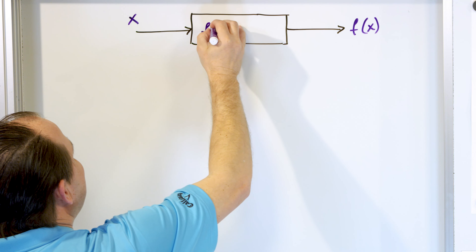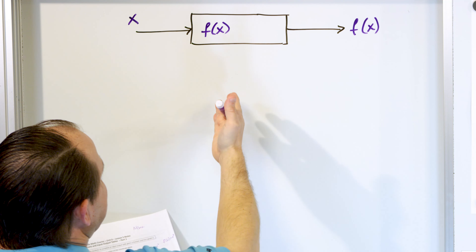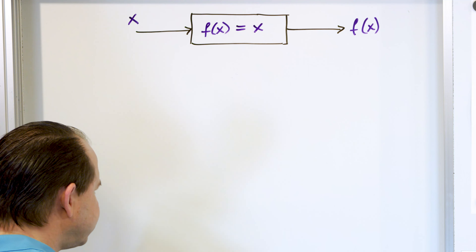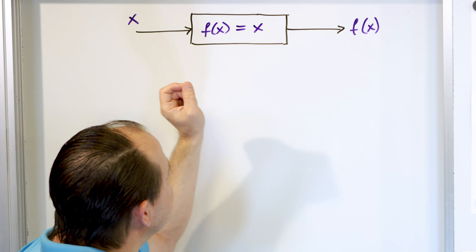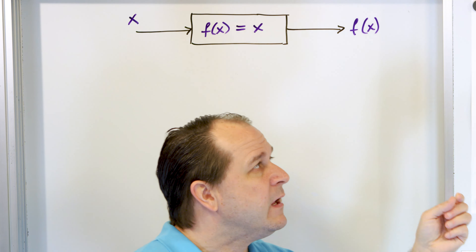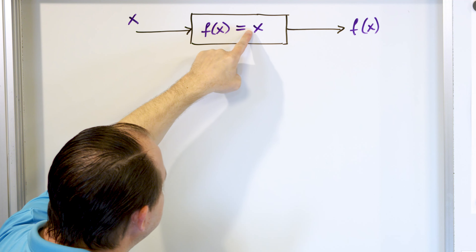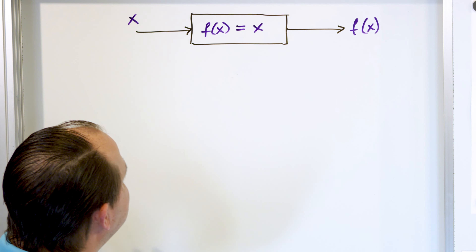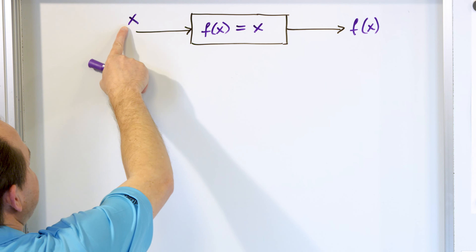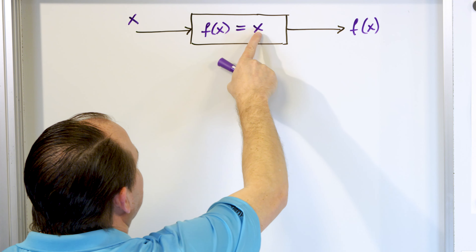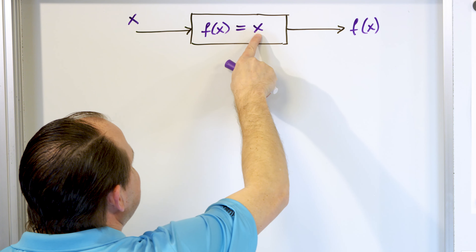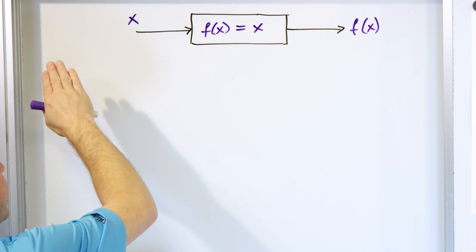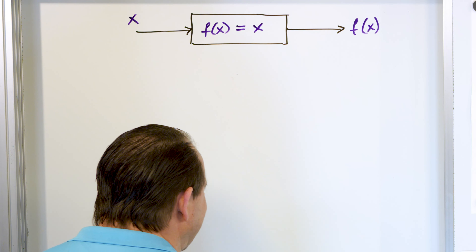The actual function on the inside can be anything — it can be a line like 2x plus 3 or whatever. For the sake of illustration, I'm going to say f of x is equal to x, the simplest function you can think of. Because if you remember, the equation of a line is mx plus b, so this is a line with a 1 in front of the x and a y-intercept of 0. So if I put a number 1 in, the output is also 1; if I put a 2 in, the output is 2; if I put a negative 3 in, I get a negative 3 out.